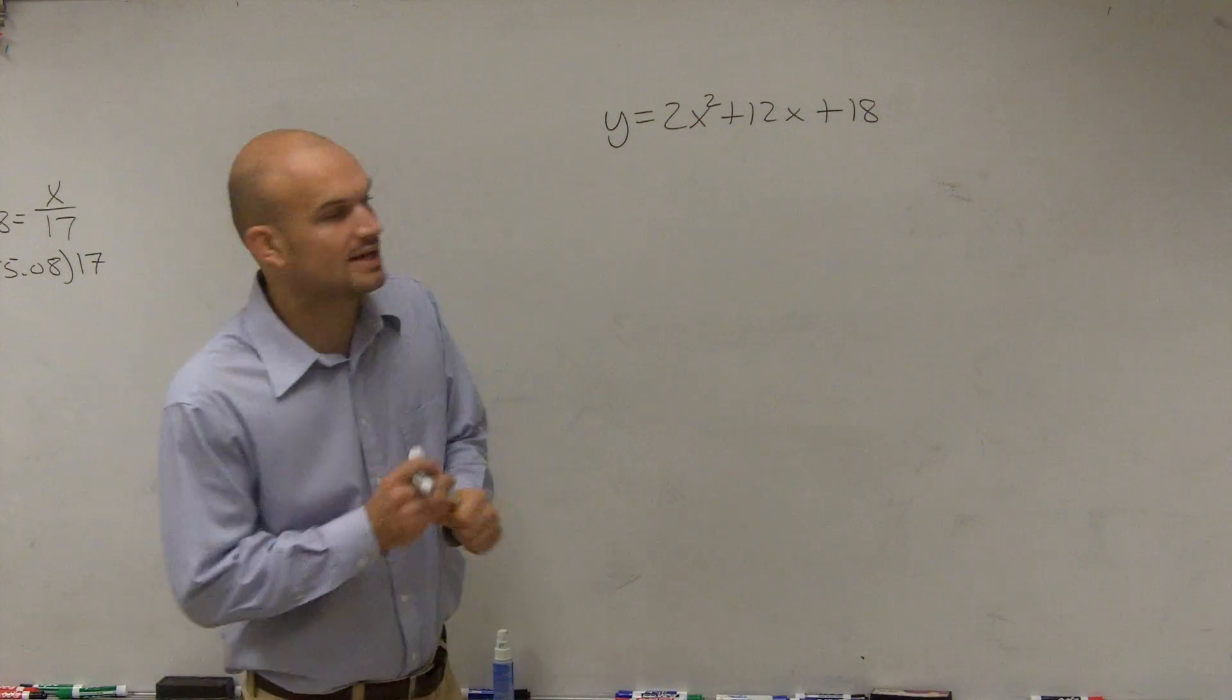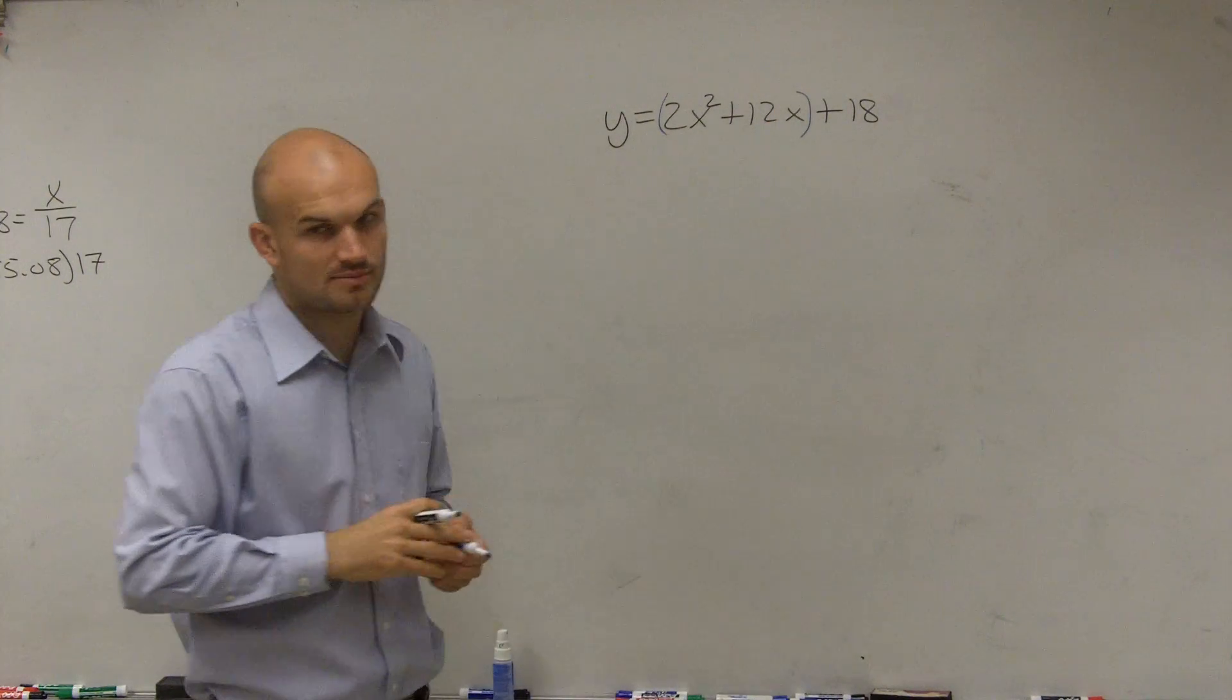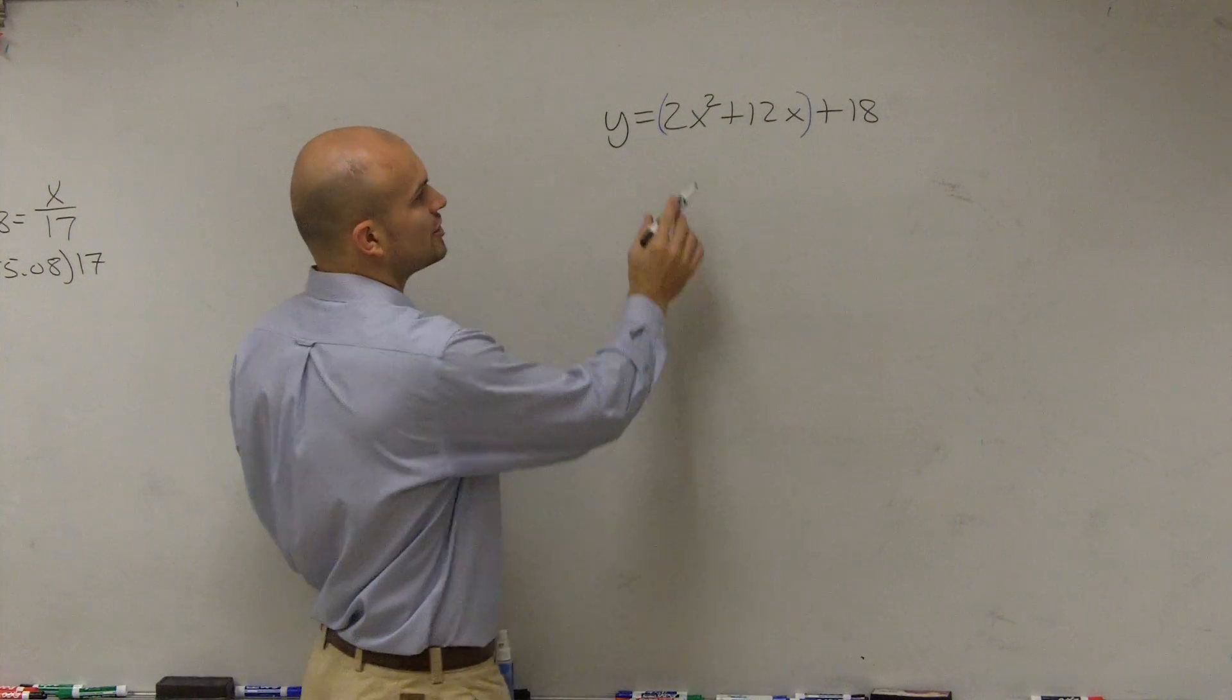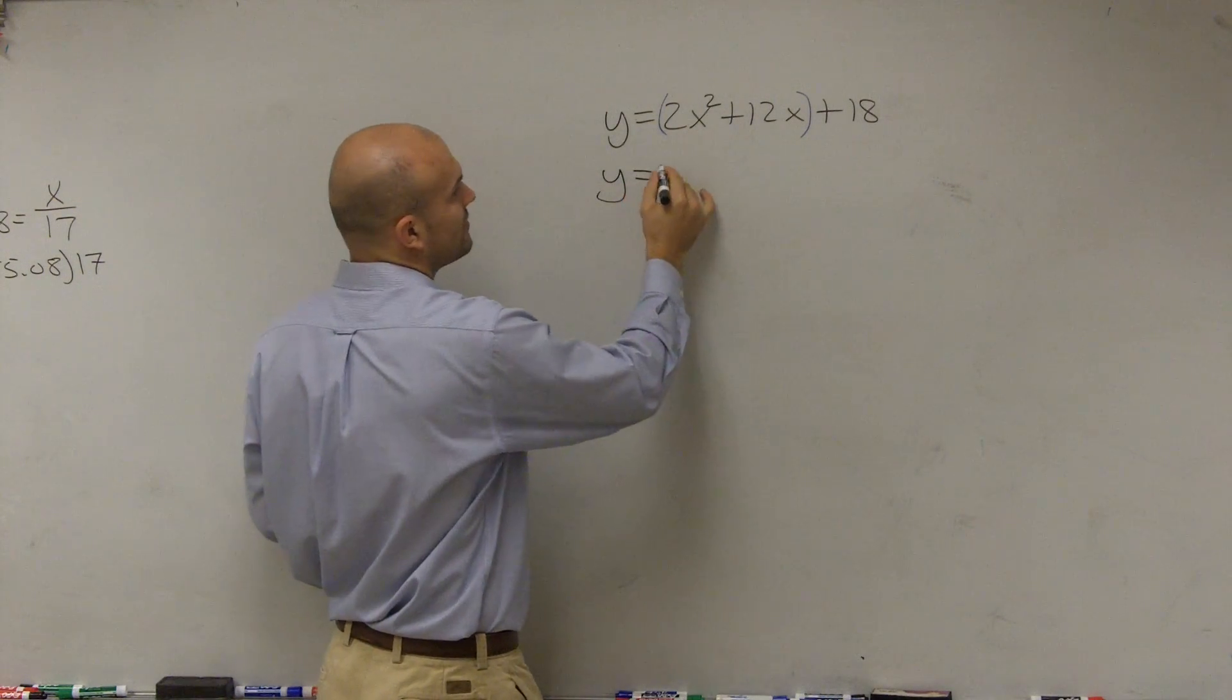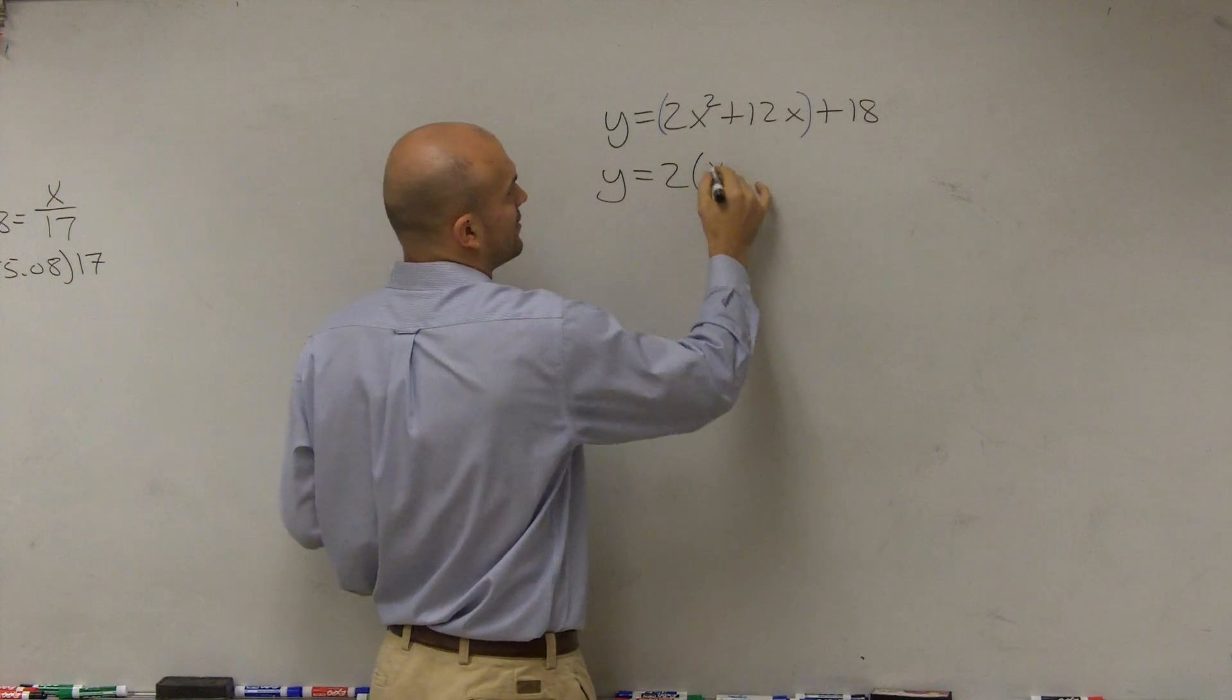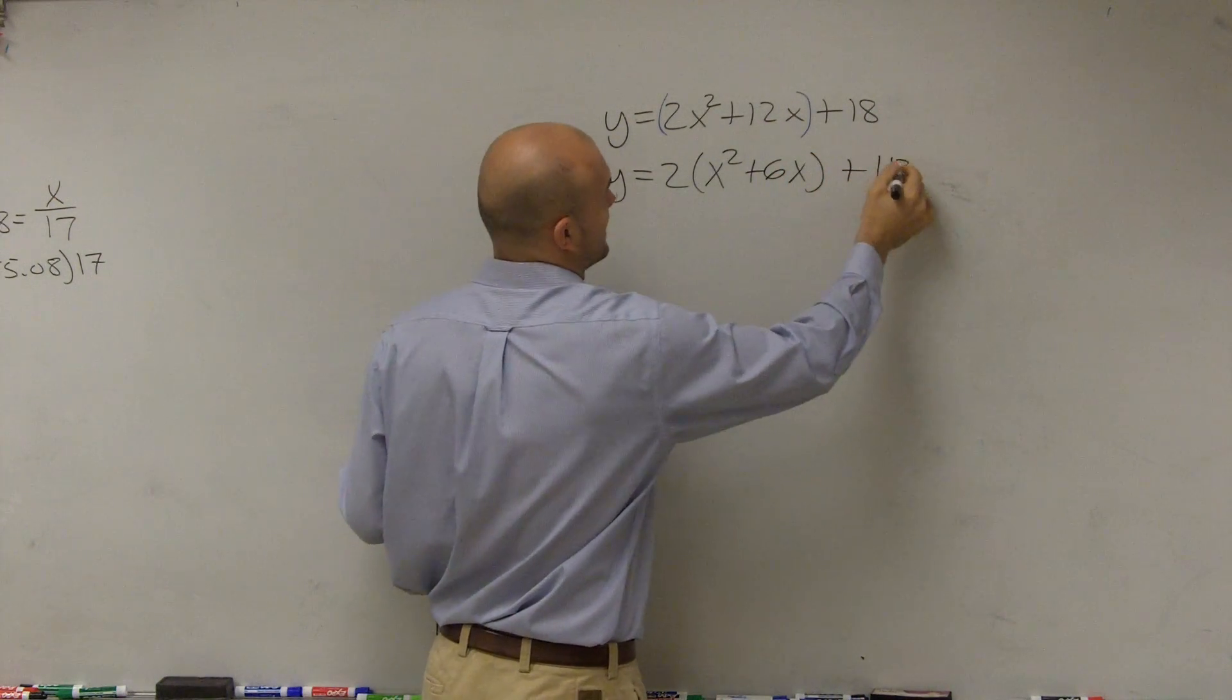So to do that, remember the first thing I told you to do is put parentheses around your first two terms. Then we need to make sure a is equal to 1. So to get our a equal to 1, we factor out a 2 out of our first two terms. Therefore, we're left with x squared plus 6x plus 18.